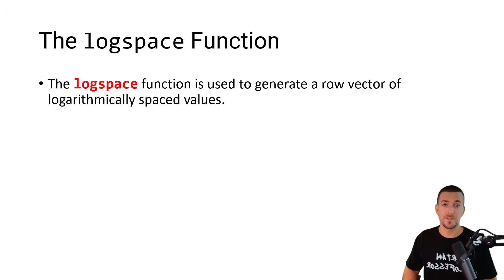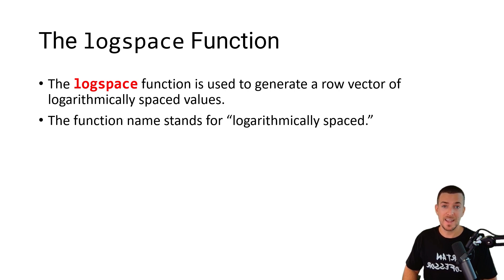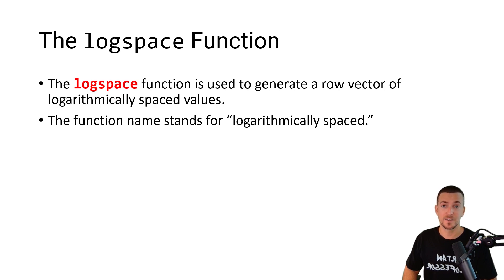The logspace function is used to generate a row vector of logarithmically spaced values. The function name stands for logarithmically spaced. The function is used when you need a set of points that span a wide range of magnitudes.